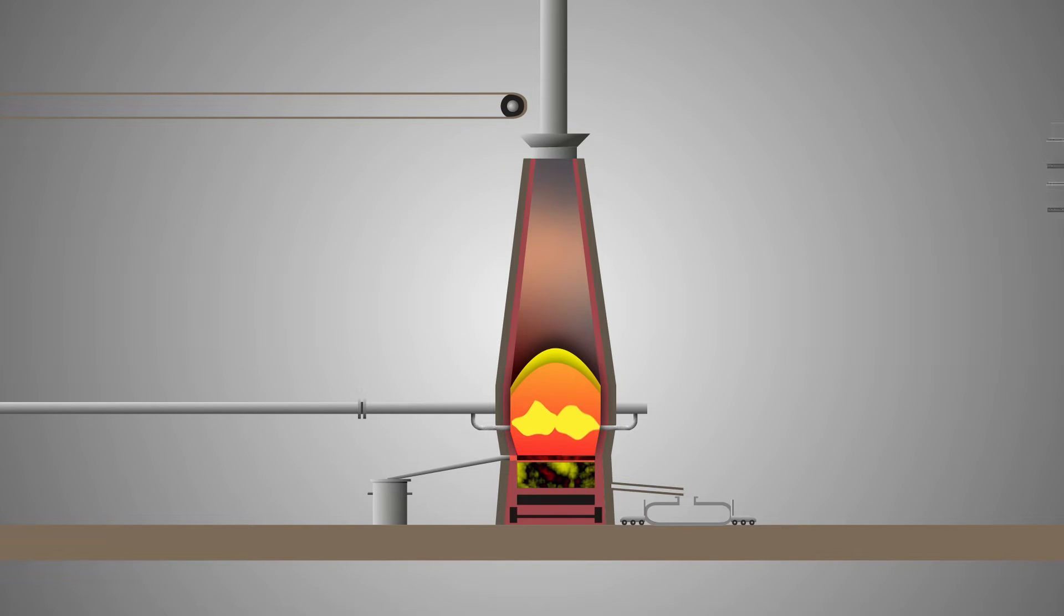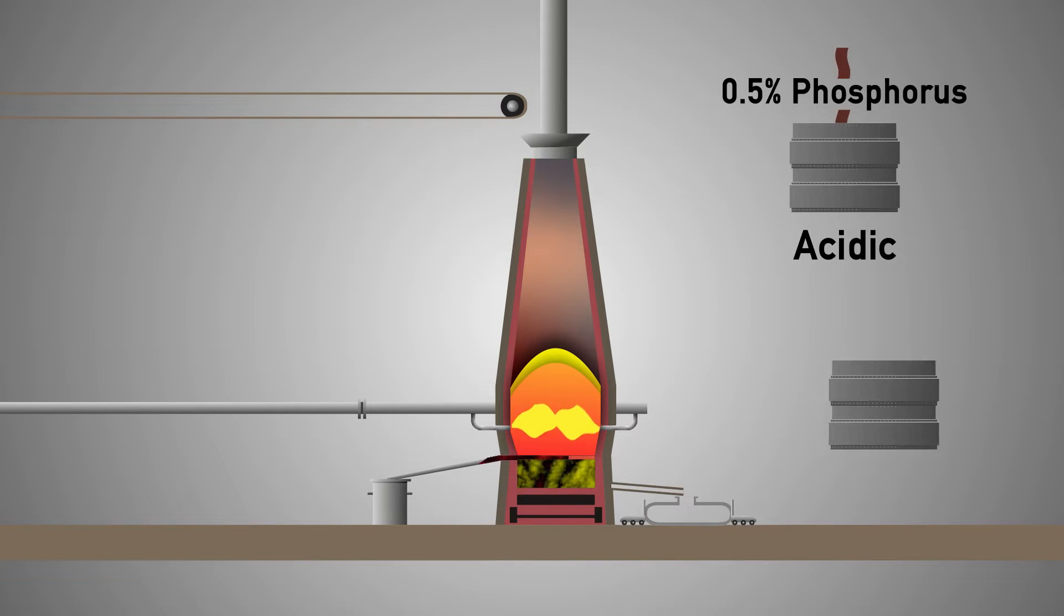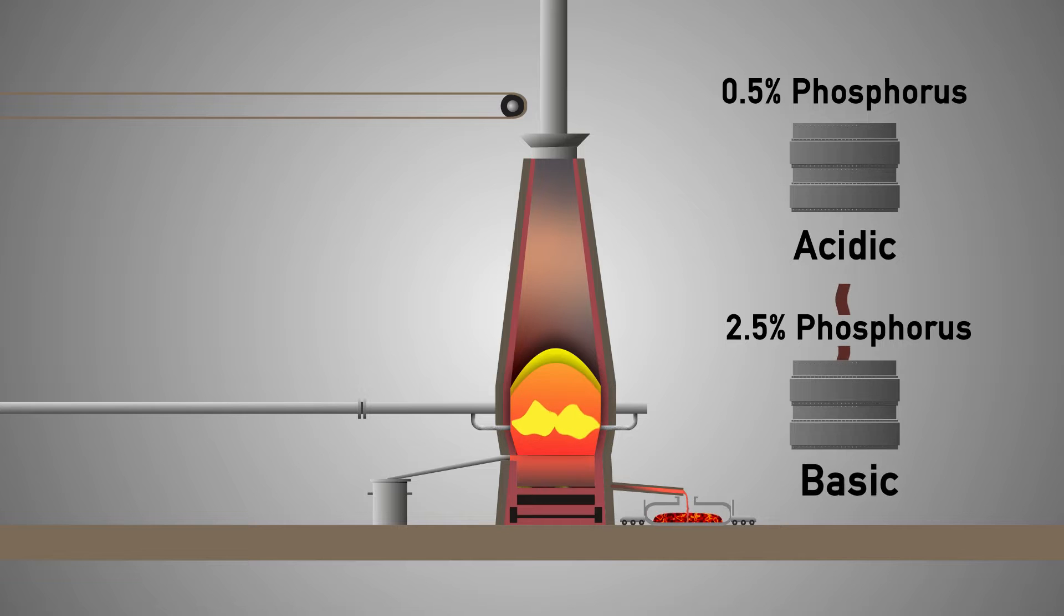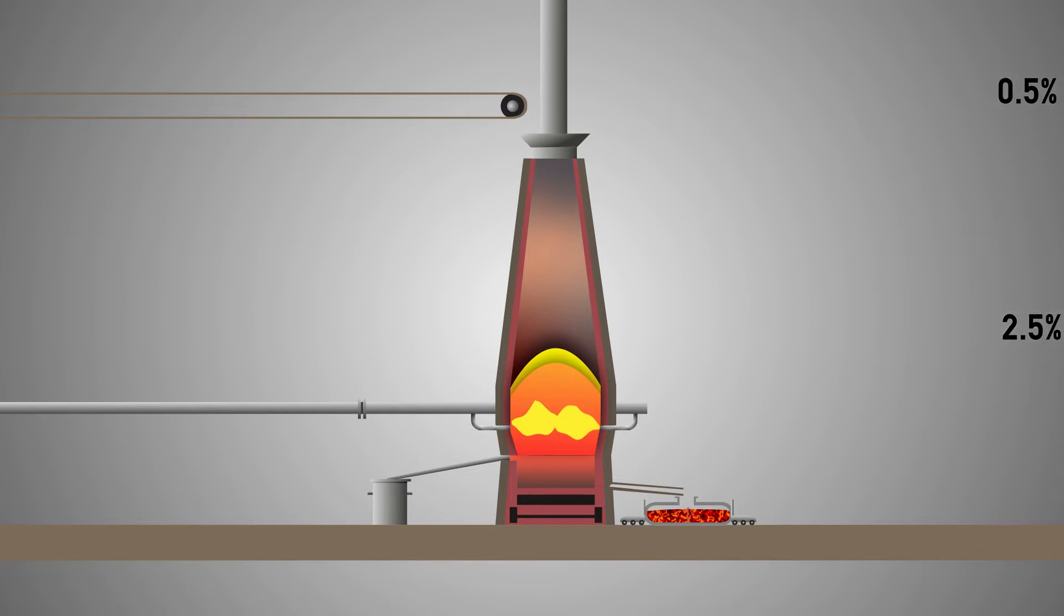When the iron ore contains less than around 0.5% phosphorus, phosphorus removal during oxygen steelmaking is insignificant and gives rise to an acidic slag. When the iron ore contains around 2.5% phosphorus, which is more common, significant phosphorus removal during oxygen steelmaking does occur, giving rise to a basic slag. In this case, the oxygen steelmaking process becomes known as basic oxygen steelmaking.